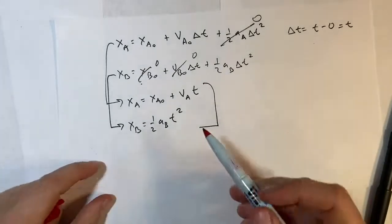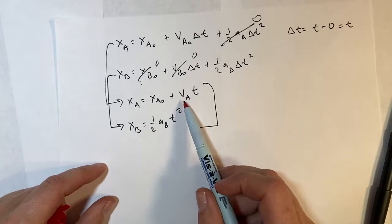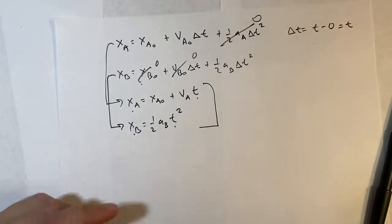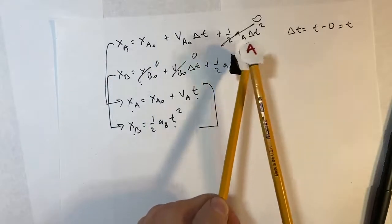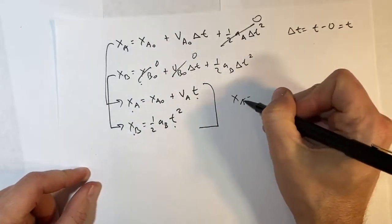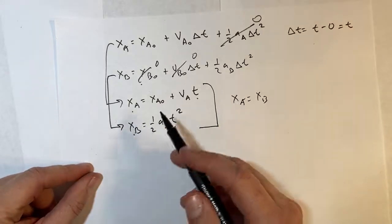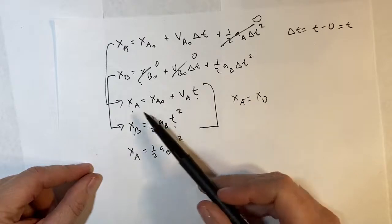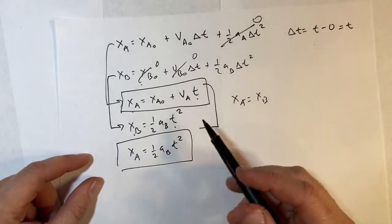Looking at the unknowns: I don't know x_A, I don't know x_B, and I don't know t — that's three unknowns. But when the cars meet, they're at the same position at the same time, so x_A equals x_B. Substituting that in: x_A equals one-half a_B times t squared. Now I have two equations and two unknowns — x_A and t.